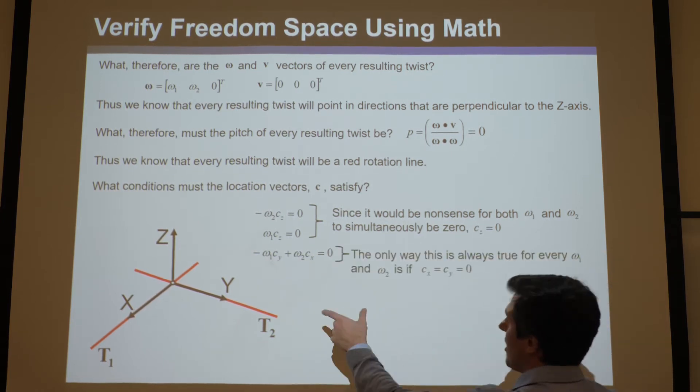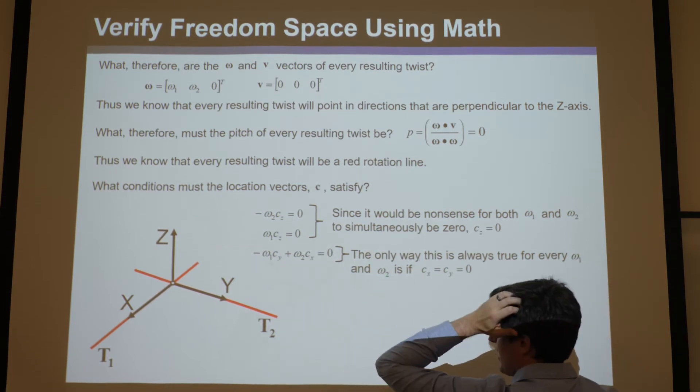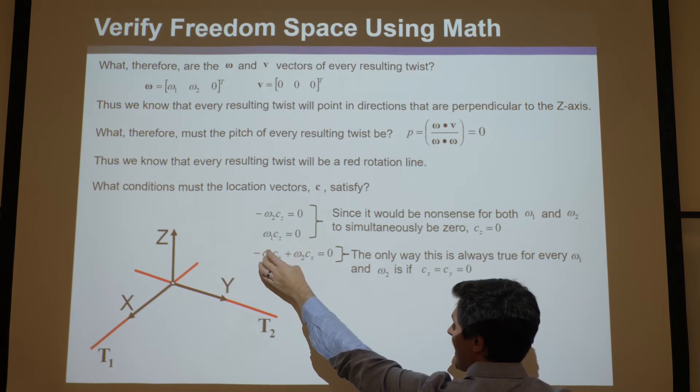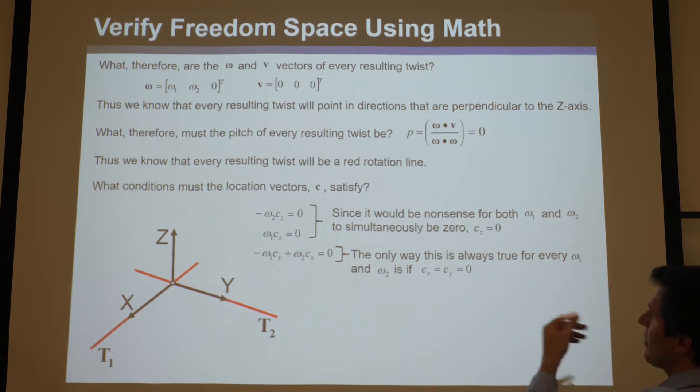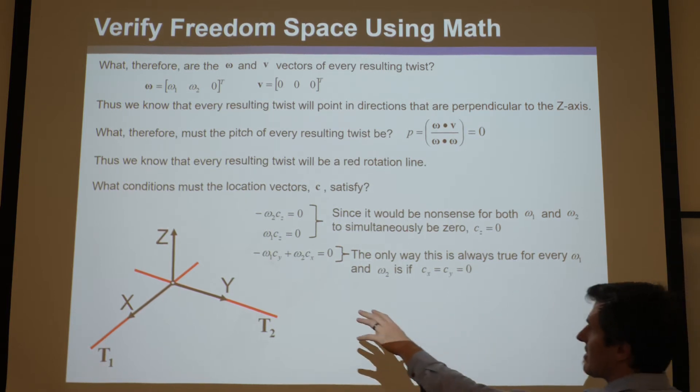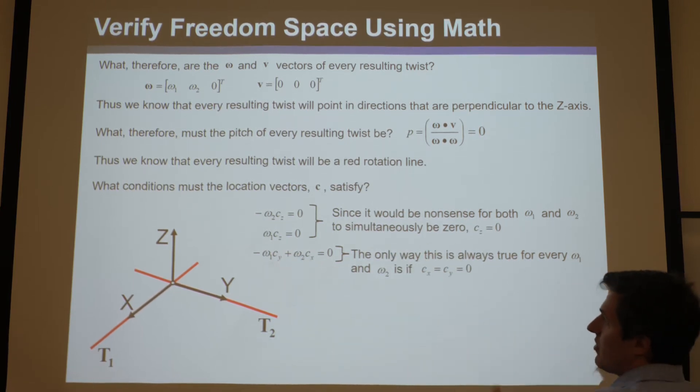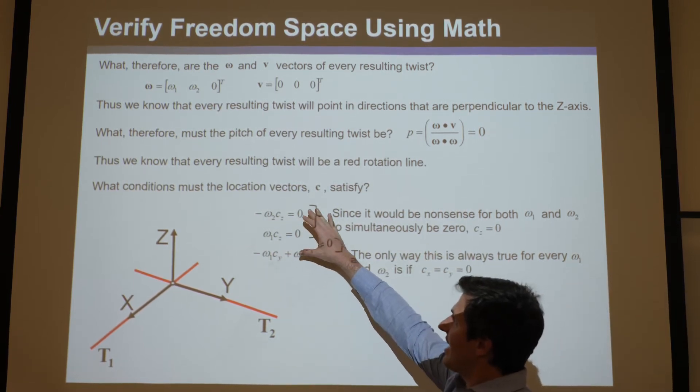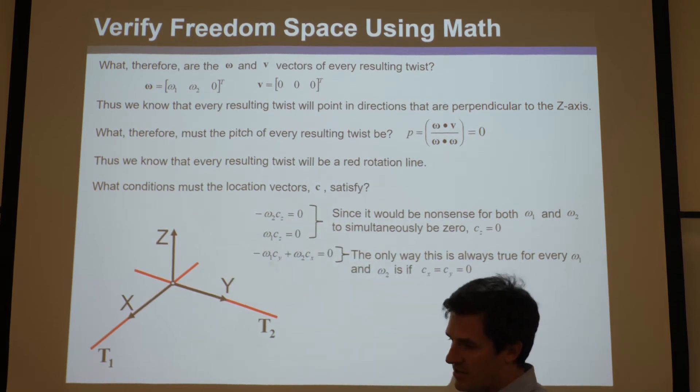And then for this one, the only way this is always true for every omega 1 and 2 is if Cy and Cx were also 0. And certainly you can know a C vector of 0, 0, 0 is going to satisfy all these equations.